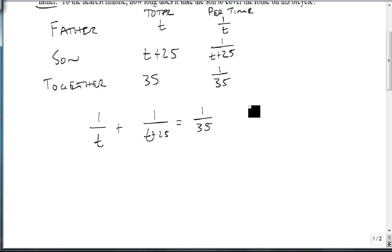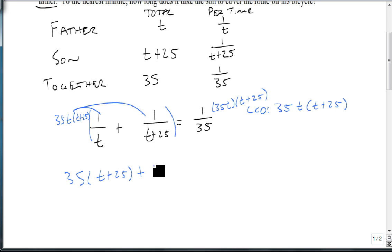We find our lowest common denominator, which is 35t times t plus 25, and we multiply both sides by that. When we distribute, the t on the first one will divide out, leaving 35 times t plus 25. The t plus 25 will divide out on the second one, and the 35 will divide out on the right side.